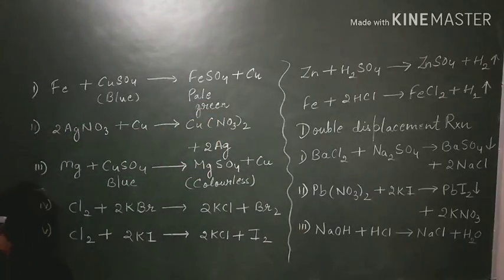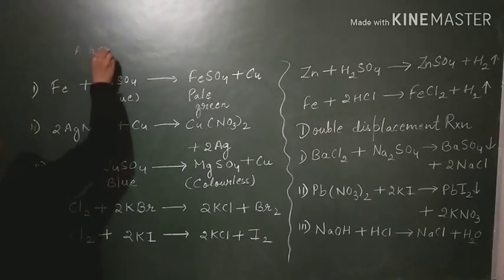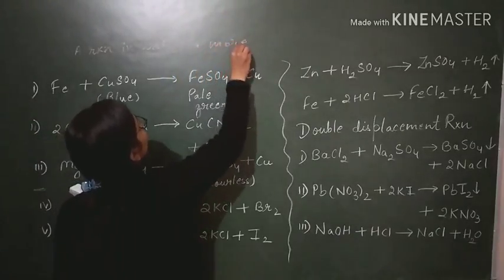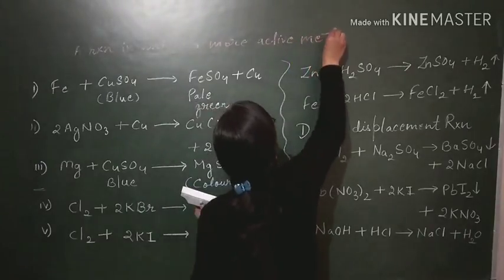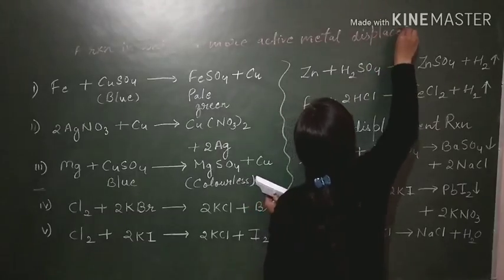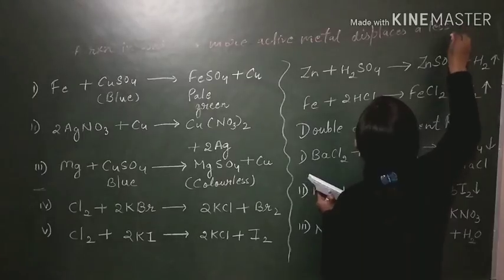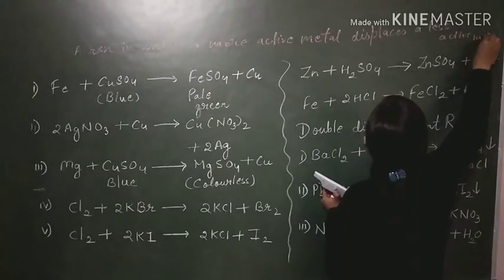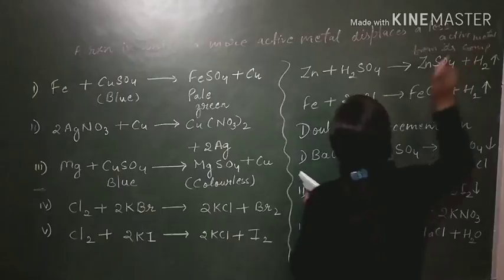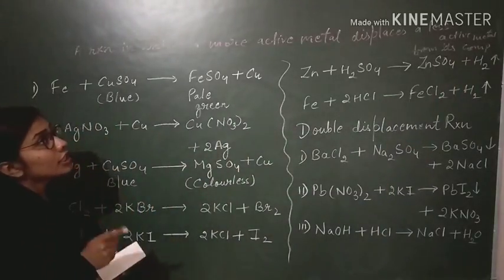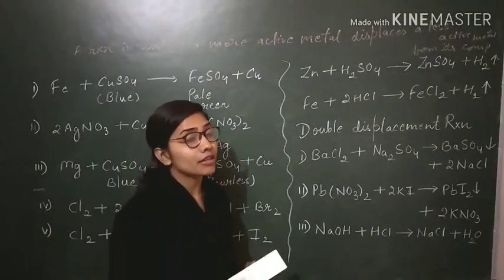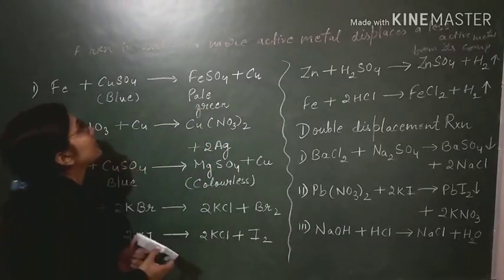Displacement reaction is simply a reaction in which a more active metal displaces a less active metal from its compound, or a reaction in which a more active non-metal displaces a less active non-metal from its compound. It is called a displacement reaction.